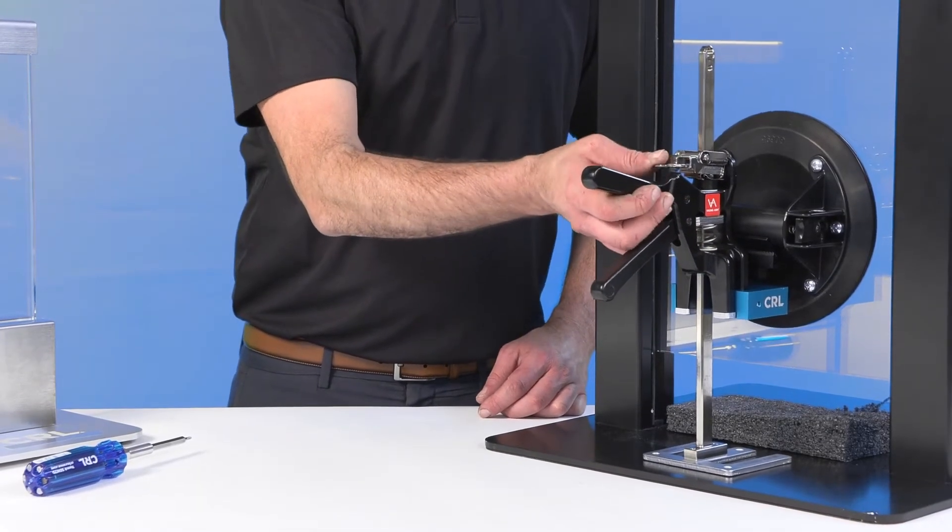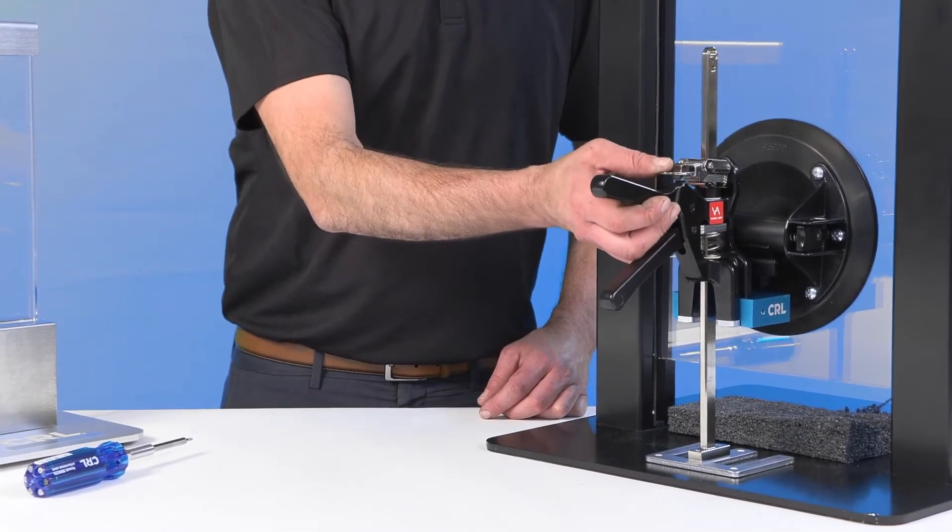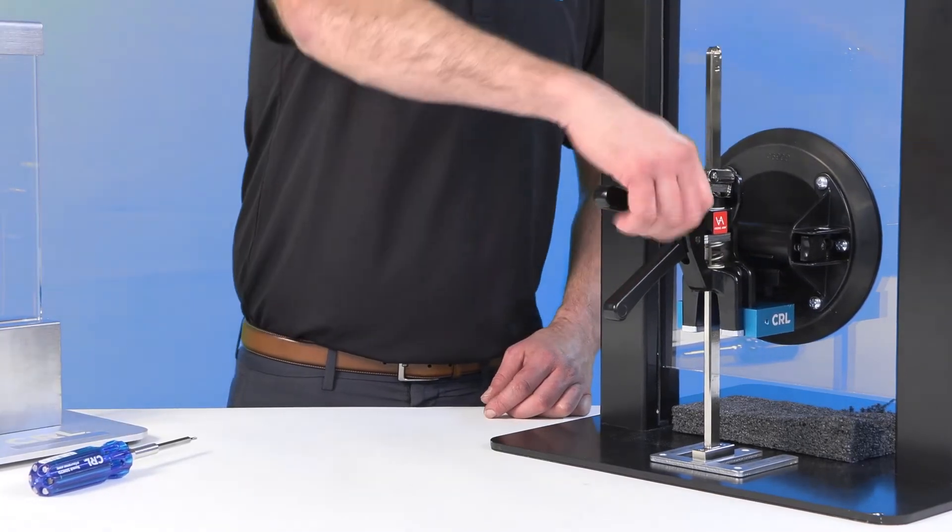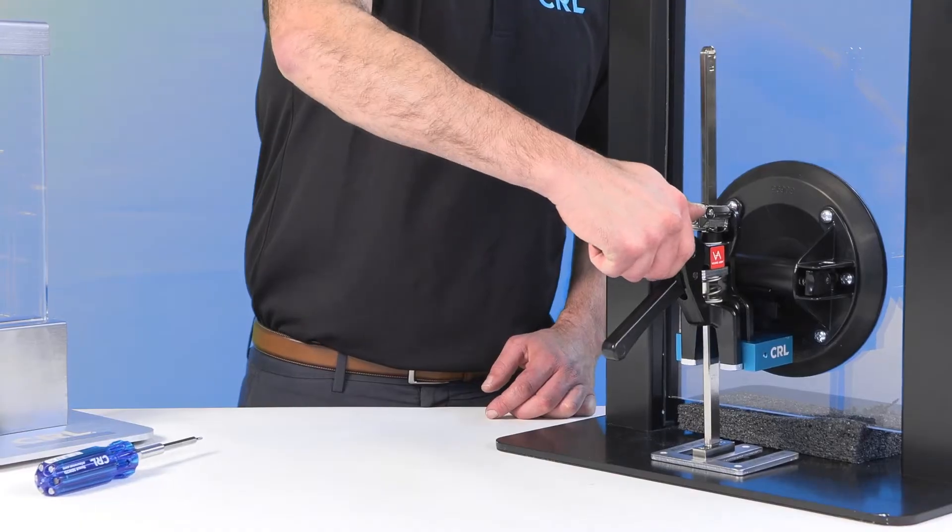You can lower the glass incrementally in 1mm increments by pressing the left button. Press both buttons to accelerate the tool all at once.